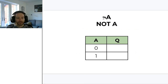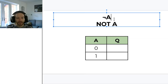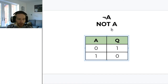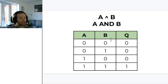The easiest of the lot is NOT, represented by the tilde symbol — you can type it by pressing shift and the key to the left of the 1 button. That means NOT. NOT A: the truth table is dead simple — if A is 0, Q is 1, and if A is 1, Q is 0. The truth table for NOT only has two rows because it only has one input. With two inputs we get four rows. If you have three inputs you get eight rows — it follows the powers of two: 1, 2, 4, 8, 16, 32, and so on.